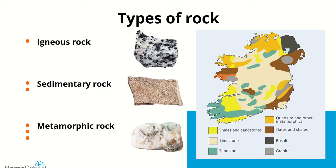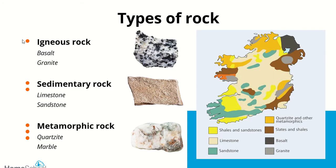We've got our three families of rock, but what type of rock belongs to each family? With igneous rock we have basalt and granite. With sedimentary rock we have limestone and sandstone. With metamorphic rock we have quartzite and marble. I want you to pause the video and take down these examples — igneous, sedimentary, and metamorphic — then hit play when you're ready.